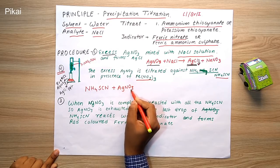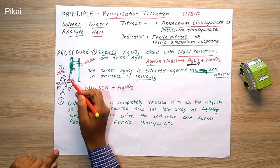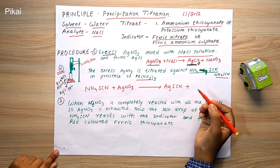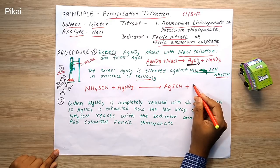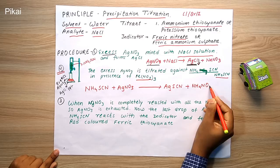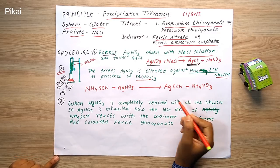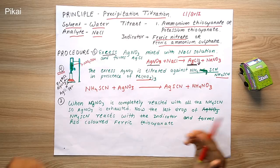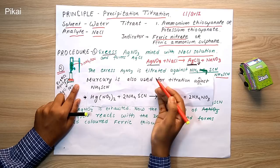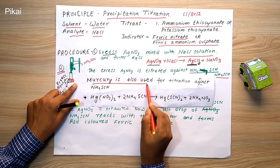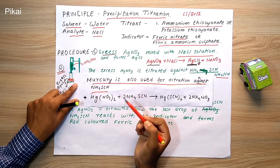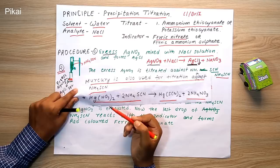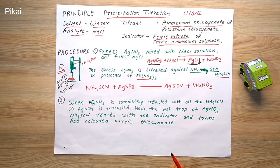The silver nitrate was in excess after the first reaction with NaCl. Now it reacts with NH4SCN to form AgSCN (silver thiocyanate), with NH4NO3 as a byproduct. This reaction can also be done with mercury — mercury can be employed to achieve the same reaction. When 2 AgNO3 reacts with 2 NH4SCN, it forms 2 AgSCN.